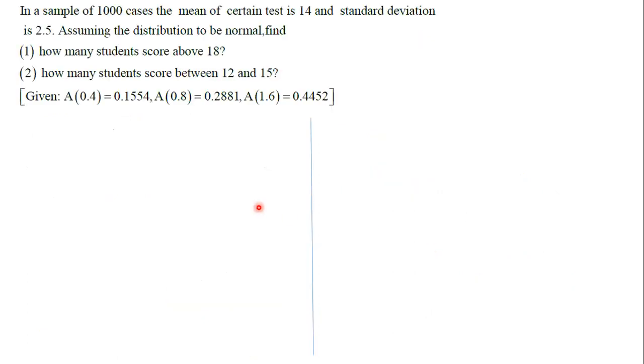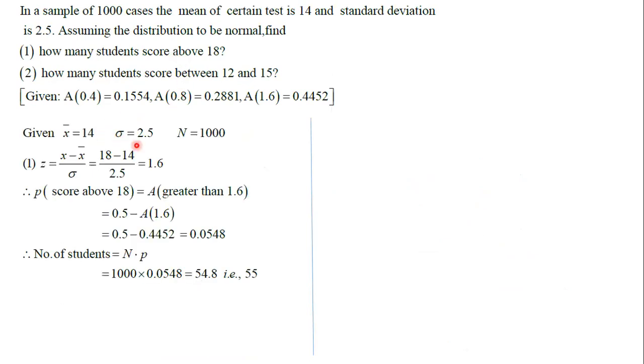Same in this case. This is our question we already did. We have to take this mean 14, standard deviation 2.5, 1000 students. So that z value is 1.6, greater than 18, find 0.5 minus 0.4452.